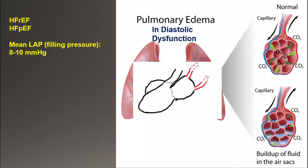As mentioned in part one, heart failure is divided into two categories: systolic and diastolic. In systolic, we have a pumping problem, and in diastolic, a filling problem.